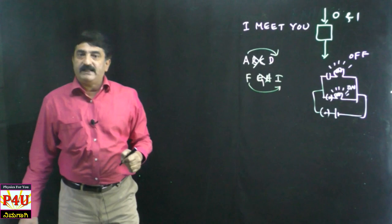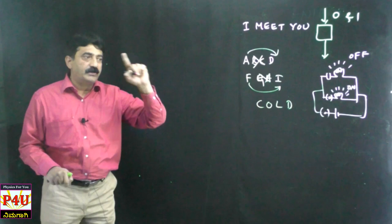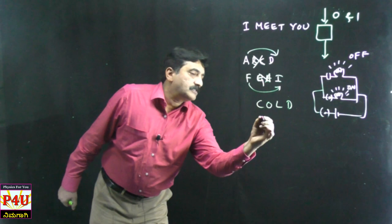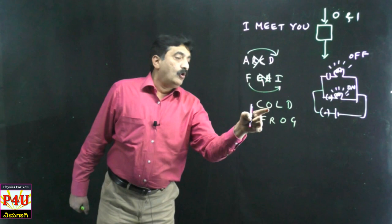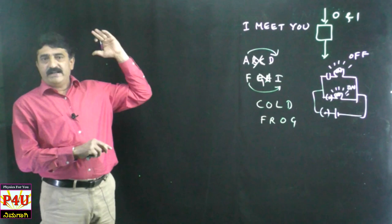So, dear students, I give you one small task. Pause this video and check what the word 'FROG' actually means according to Julius Caesar's cipher — C corresponds to F, L to O, and so on, leaving two alphabets in between. Like this, our people had their own techniques. Gradually these techniques evolved.